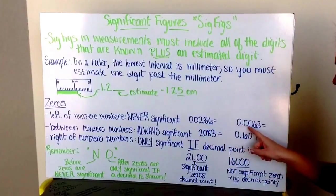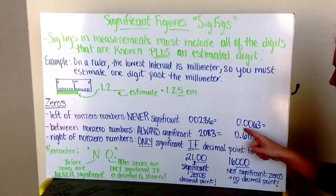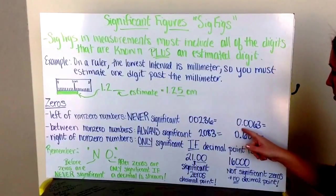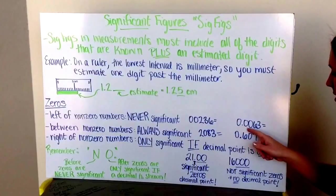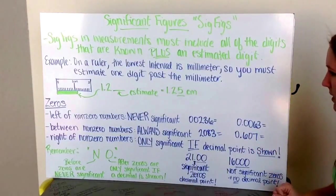My number here is 0.0063. Well, again, these zeros that are in front, they're left of the non-zero numbers. These do not count as significant figures. So it's just my 6 and 3. Here I have two significant figures.